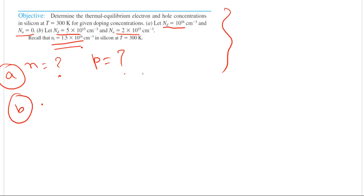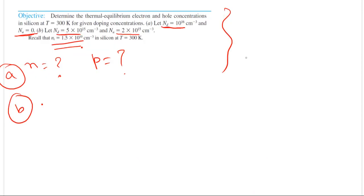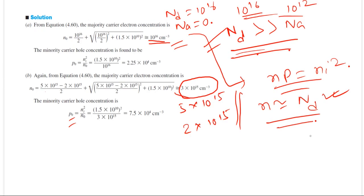Now let's solve a numerical problem. The problem asks to find the majority and minority carrier concentrations — that is, electron and hole concentrations. Clearly Nd is greater than Na for both cases, so the semiconductor is n-type, meaning majority carriers are electrons and minority carriers are holes. You can apply the quadratic formula derived previously. For the first case, Na equals zero.